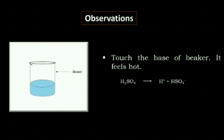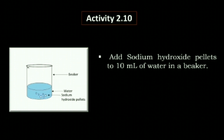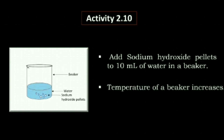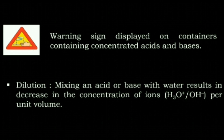When concentrated sulphuric acid dissolves in water, it produces H+ and HSO4− ions; this hydrogen combines with water and forms H3O+ ions. Add sodium hydroxide to 10 ml of water in a beaker — we can observe that the temperature increases as sodium hydroxide dissolves. This is the warning sign displayed on containers which hold concentrated acids and bases.